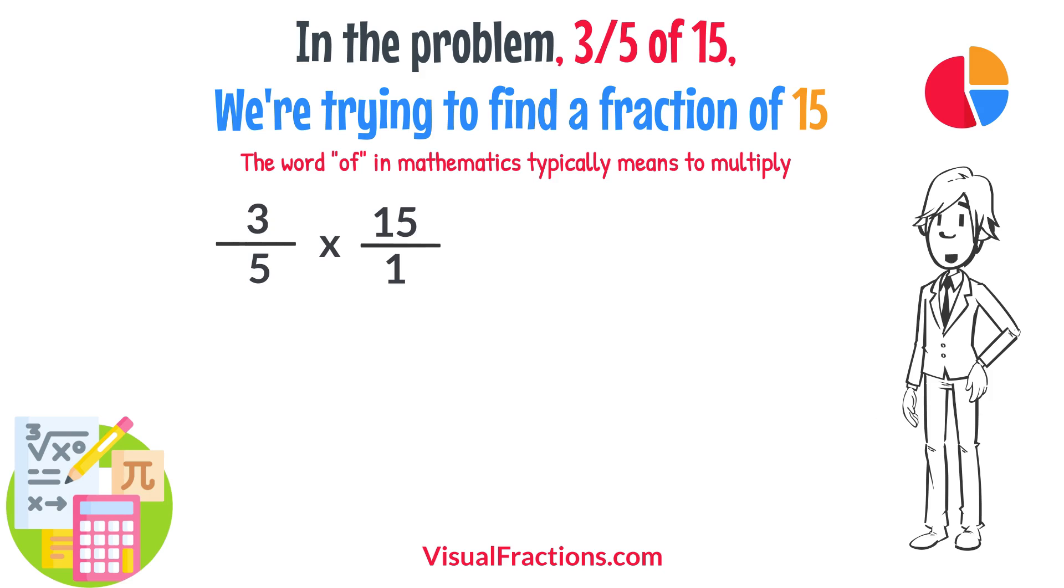Now, we proceed to multiply across. First, multiply the numerators, 3 times 15 equals 45.